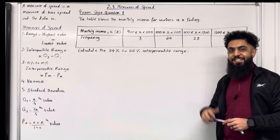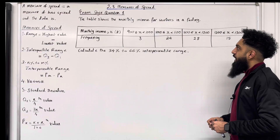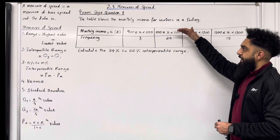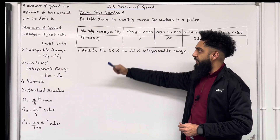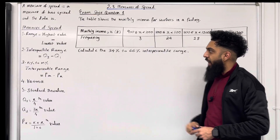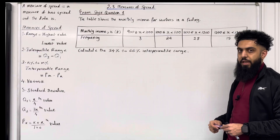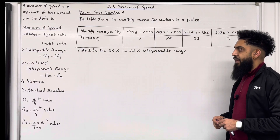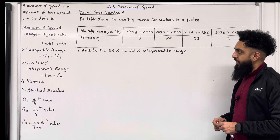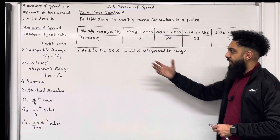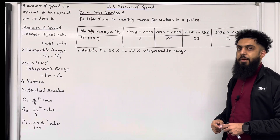Here is exam style question one. The table shows the monthly income for workers in a factory. We've got monthly income and we've got frequency. Calculate the 34 percent to 66 percent interpercentile range. Now over here what we have is grouped data. Grouped data is always continuous, so to work out the percentiles we have to use a technique called linear interpolation.